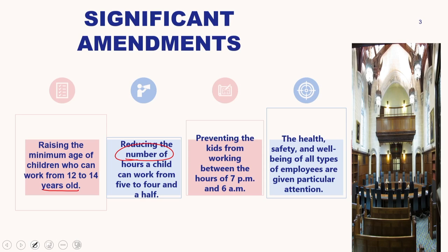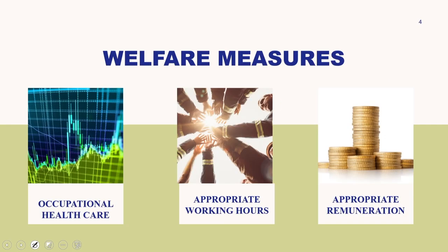Another amendment was reducing the number of hours a child can work from 5 to 4 and a half hours. Many amendments and changes have gone through with respect to what a child can work and what the age limit would be. Preventing kids from working between the hours of 7 pm and 6 am was something that critically came up as a significant amendment, essentially showing there had been exploitation in that time window. The health, safety and well-being of all types of employees are also given particular attention under the Factories Act 1948.